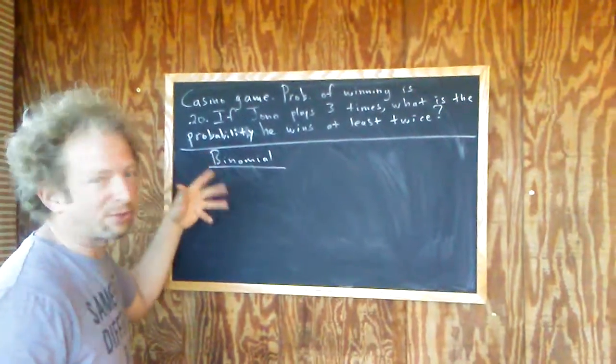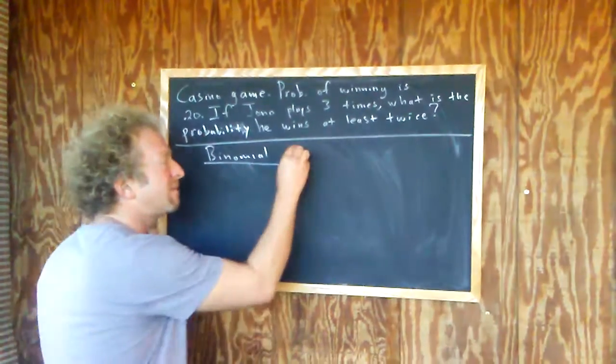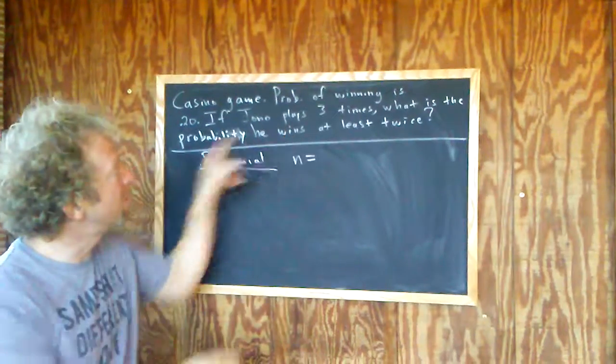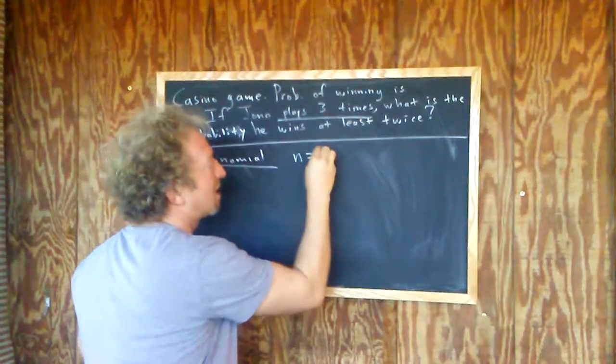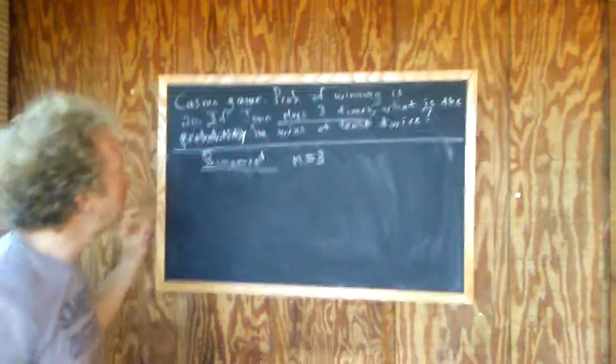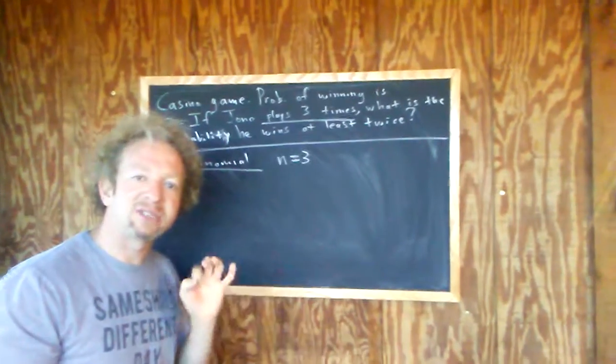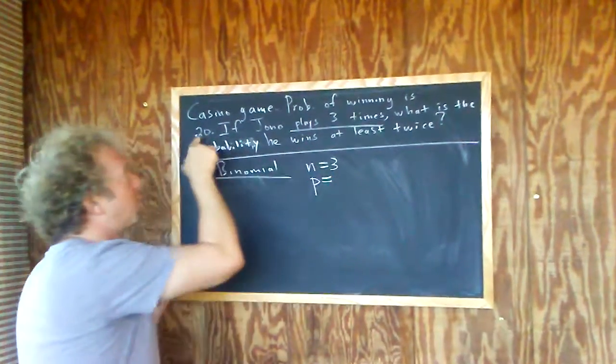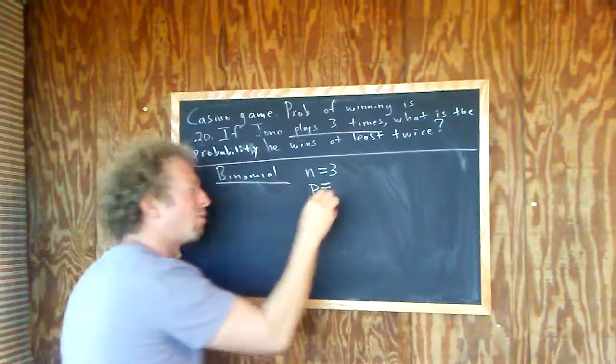So we need to find a couple variables here. N is how many times Jono plays the game. It's the number of trials. So he plays three times, so N is equal to three. P is the probability of success. So in this example here, P is 0.20. That's the probability that Jono wins.